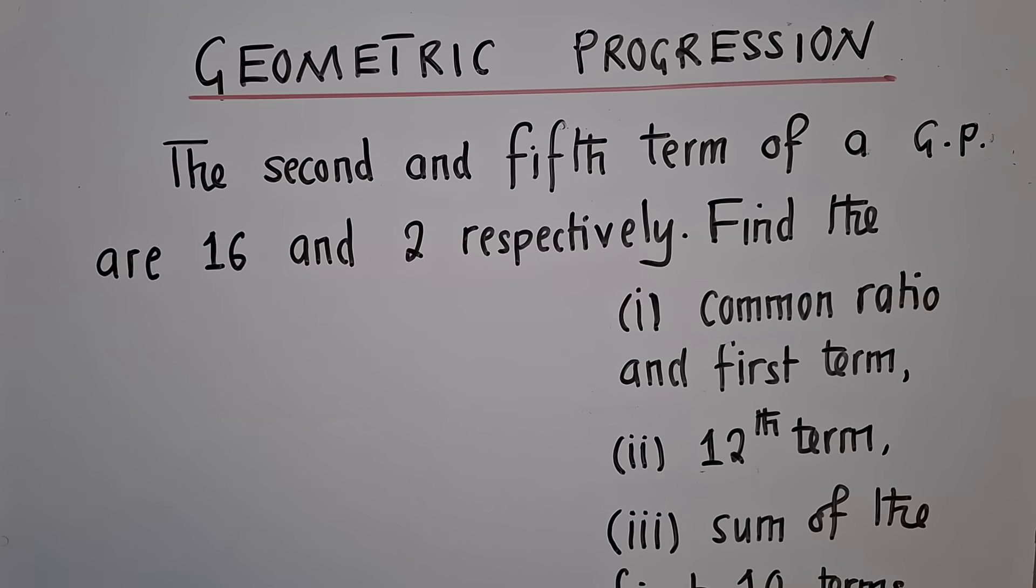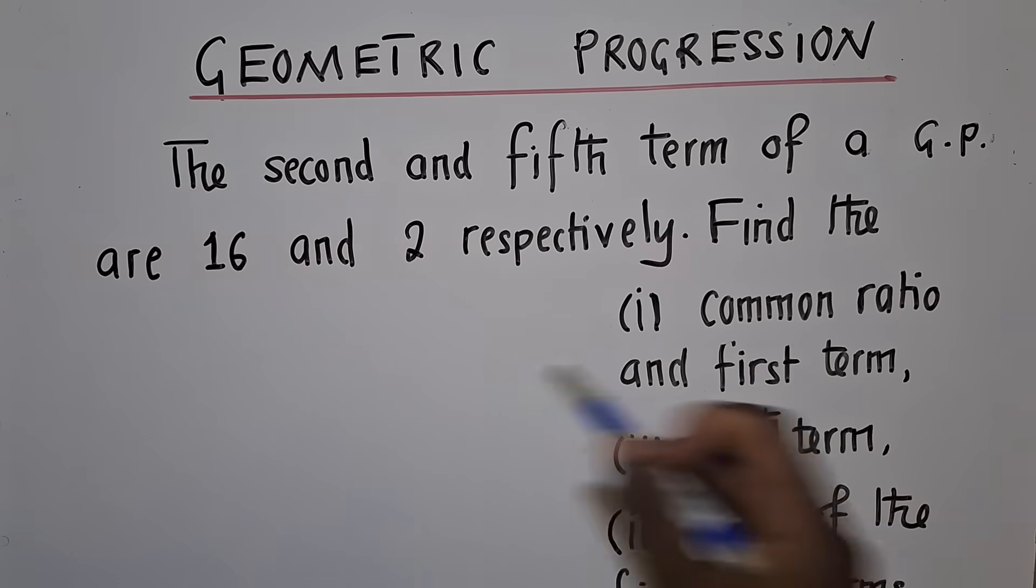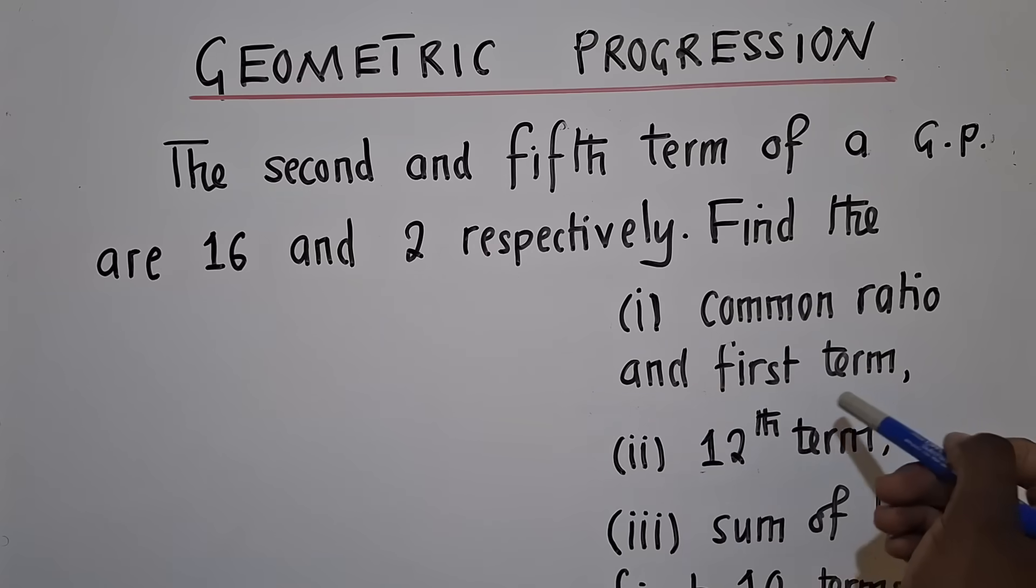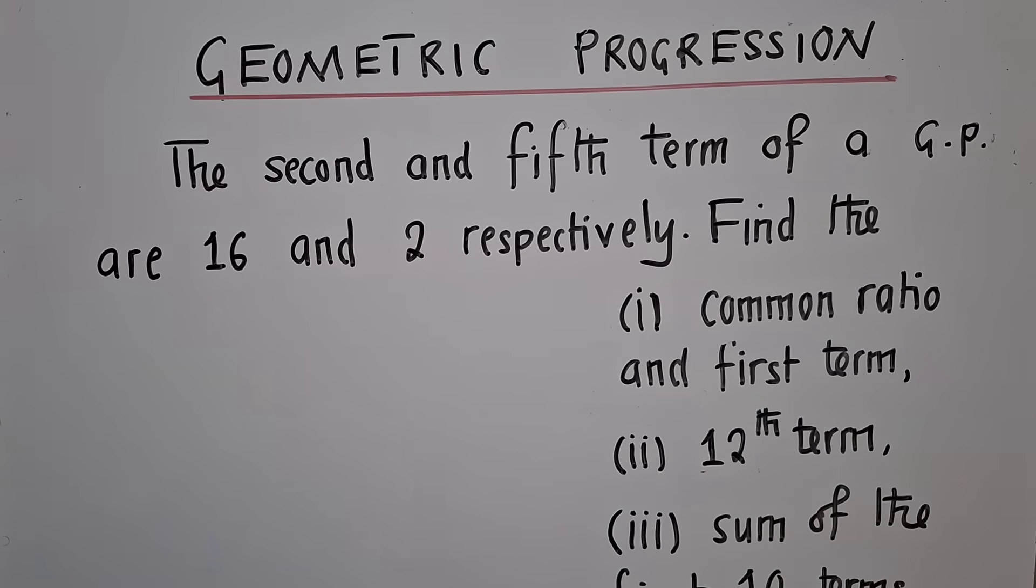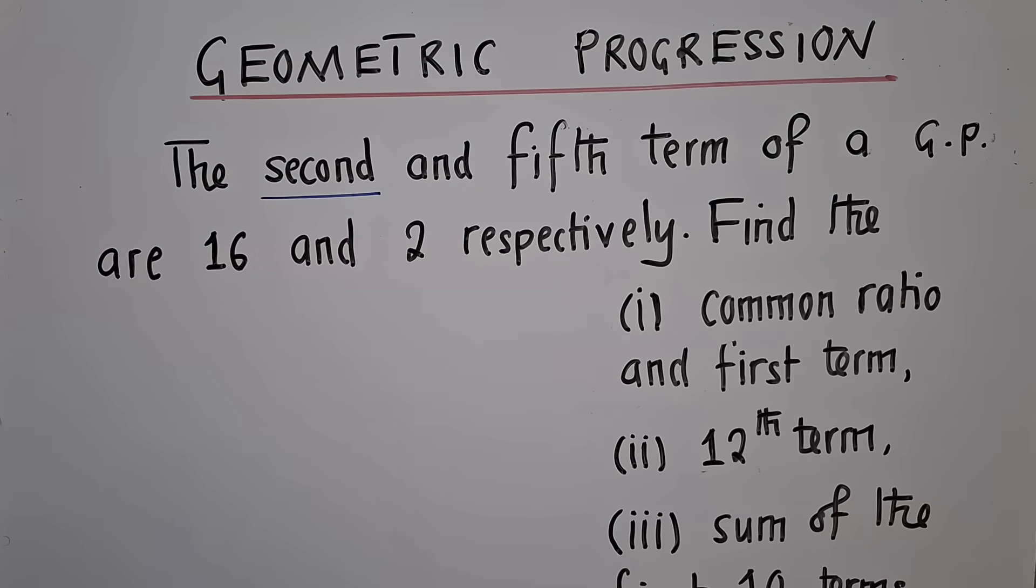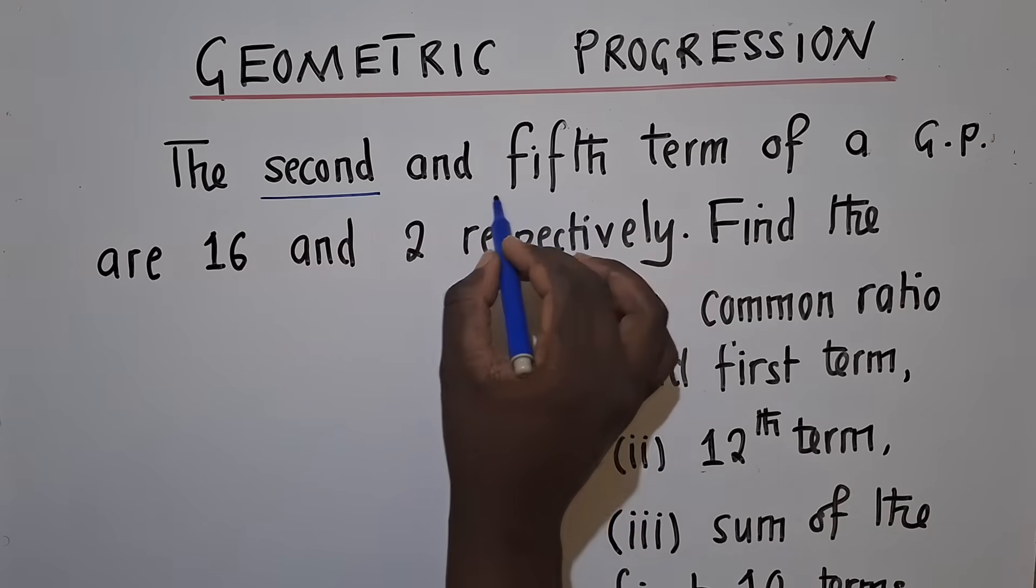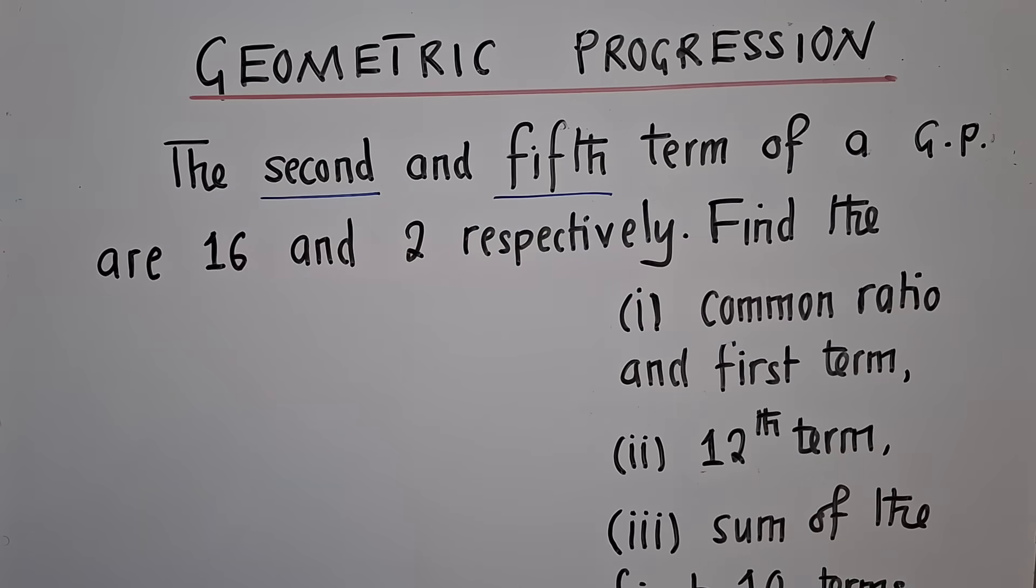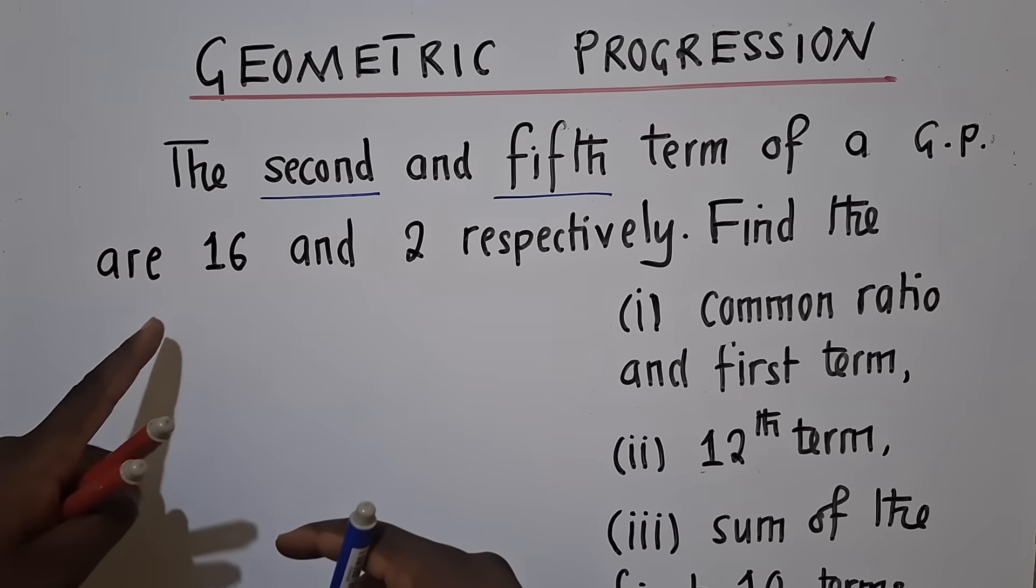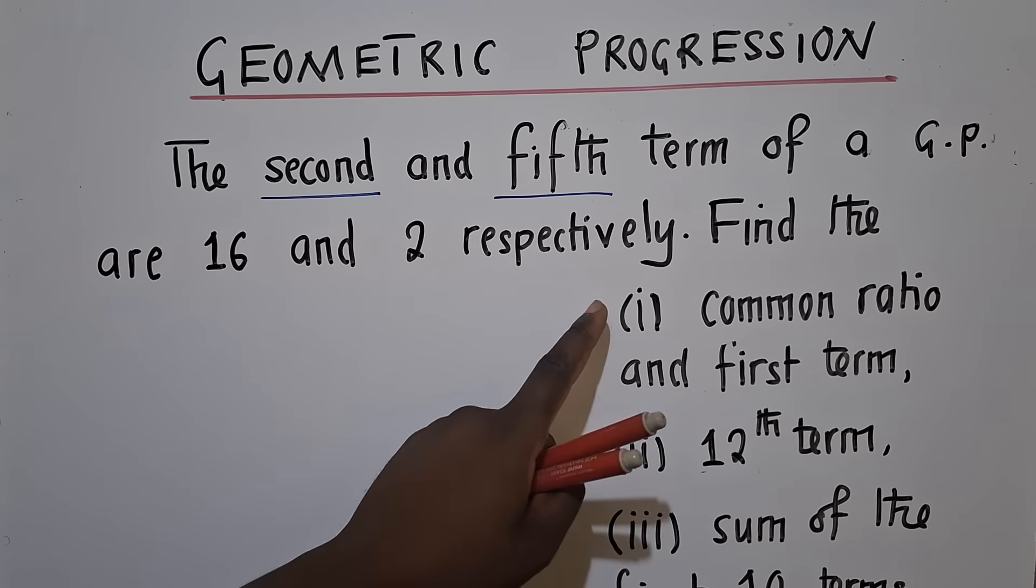I've got this question with me right over here where we need to find the common ratio and the first term. They have given us in the statement that the second term and fifth term of a GP are 16 and 2 respectively.